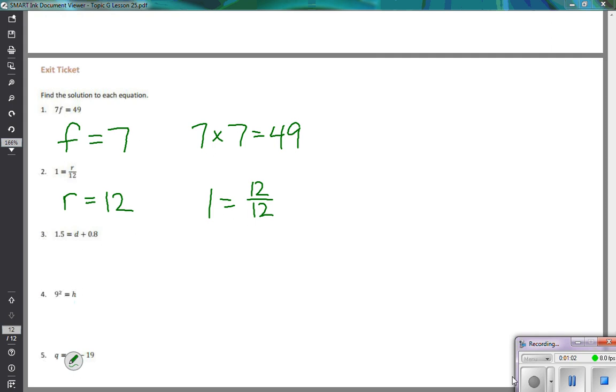But there are decimals there. So to make it equal, d would have to be 0.7. So to prove it, 1.5 is equal to 0.7 plus 0.8.